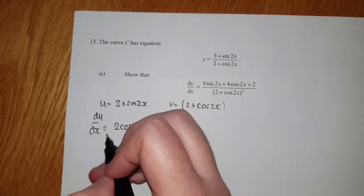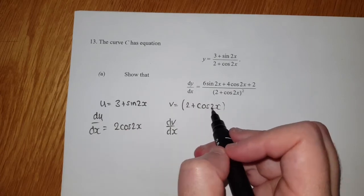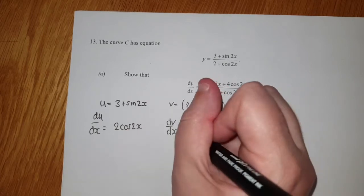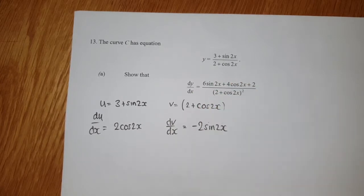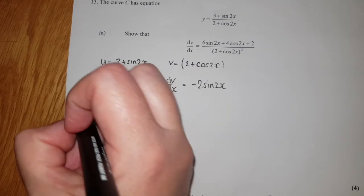The constant 3 just disappears. If I differentiate cos, I get minus sine, and bring the 2 in front, so minus 2sin(2x).